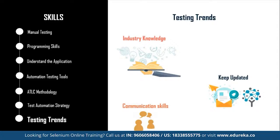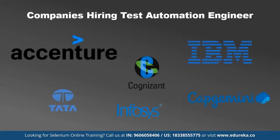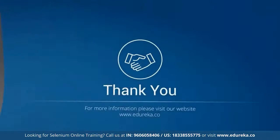Now let's see some of the top companies hiring for a test automation engineer. These companies are Accenture, IBM, Cognizant, Infosys, TCS, and Capgemini. Do keep an eye for an opportunity and utilize your skills to grab the offer. That was all about today's session and I hope this will help you in the long run to prepare yourself and get well versed with all the skills in order to become a successful test automation engineer. I hope you liked today's session — if you have any queries, put them in the chat section and we will get back to you. Thank you and happy learning.